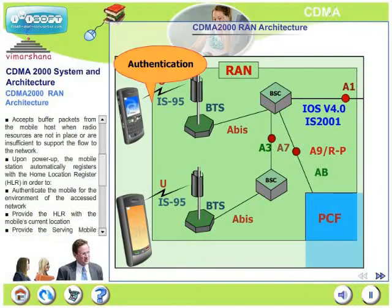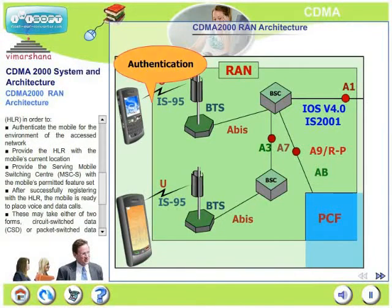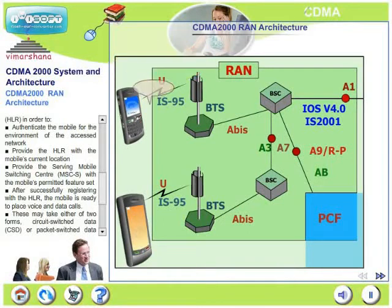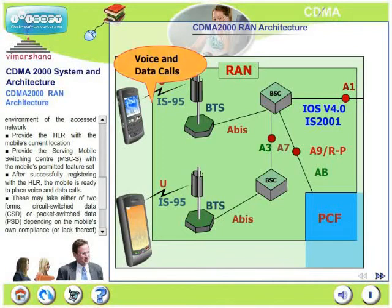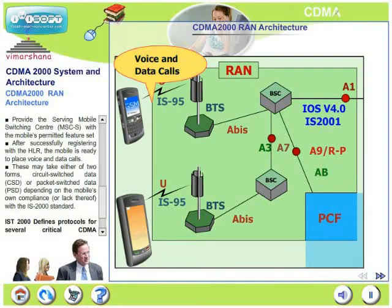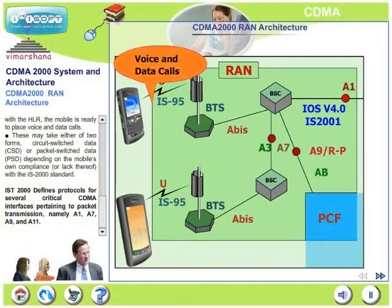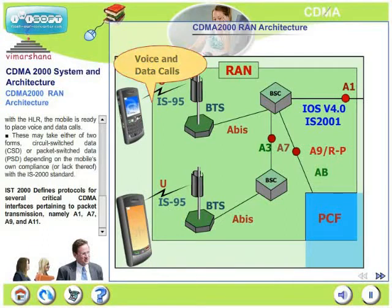It provides the serving MSC with the mobile's permitted feature set. After successfully registering with the HLR, the mobile is ready to place voice and data calls. These may take either of two forms: circuit switch data or packet switch data, depending on the mobile's own compliance with the IS2000 standard.